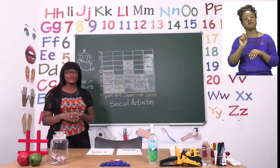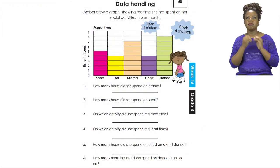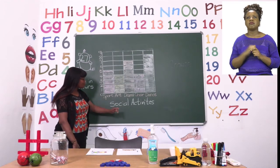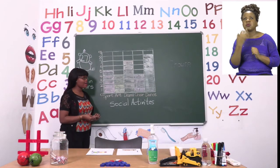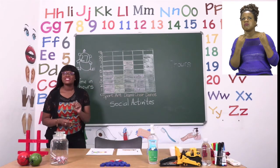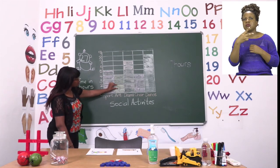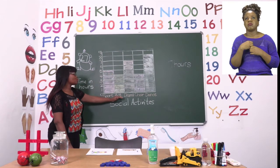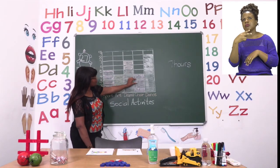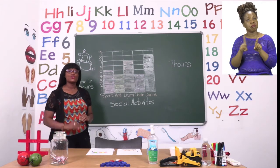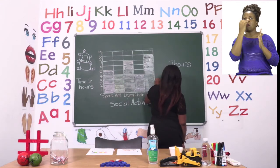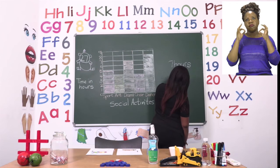Now let's skip forward and try number 4. Number 4 says: on which activity did she spend the least time? If we take a look at our activities, we have two that look like they are the same size — we have art and we have choir. But we don't know how much time, so we need to first check how many hours. Let's count the blocks: 1, 2, 3, 4 hours. So art has 4 hours. Then let's check if choir also has the same: 1, 2, 3, 4. It looks like they both have 4 hours. So our answer for number 4 would be art and choir.